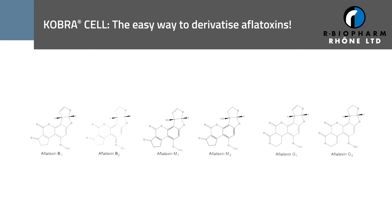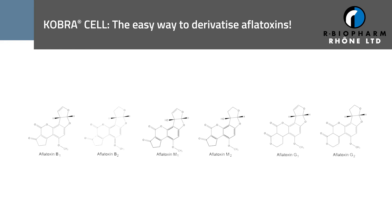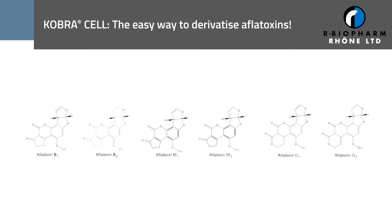Aflatoxin is a group of mycotoxins that are produced by several Aspergillus and Penicillium molds. These molds favor warm and humid conditions. Aflatoxins can be distinguished from each other based on their chemical structure.